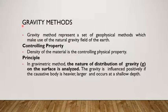The first one is gravity method. As the name suggests, this method makes use of the natural gravity field of the earth. The controlling parameter is the density of the material which can be easily identified by this method. The principle behind the gravity method is that the nature of distribution of gravity on the surface is analyzed and then the density of the material is determined.